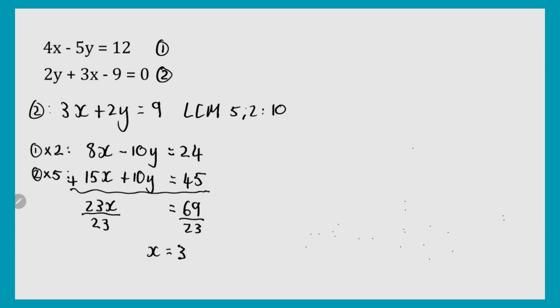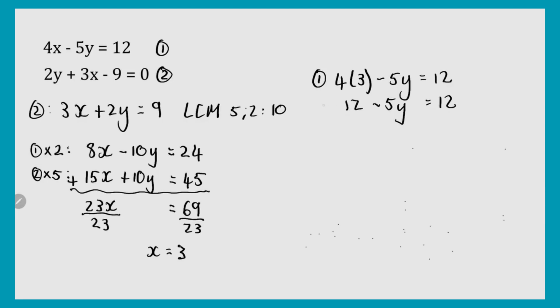Now you can substitute your x value into equation 1 or equation 2 — you'll get the same answer. Let's use the first equation: 4 times 3 minus 5y equals 12. That gives 12 minus 5y equals 12. Subtracting 12 from both sides gives negative 5y equals 0. Dividing both sides by negative 5, y equals 0. You can go back and plug in both values to verify.